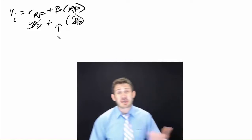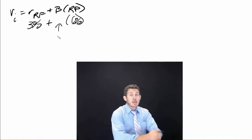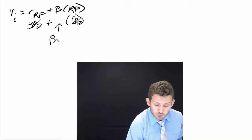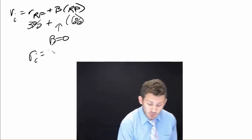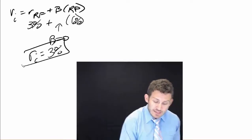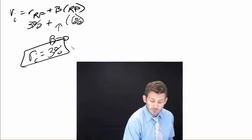They run betas of somewhere near zero. Now, if we have a beta equal to zero, what is our required return going to be? It's simply going to be 3%, equal to the risk-free rate.